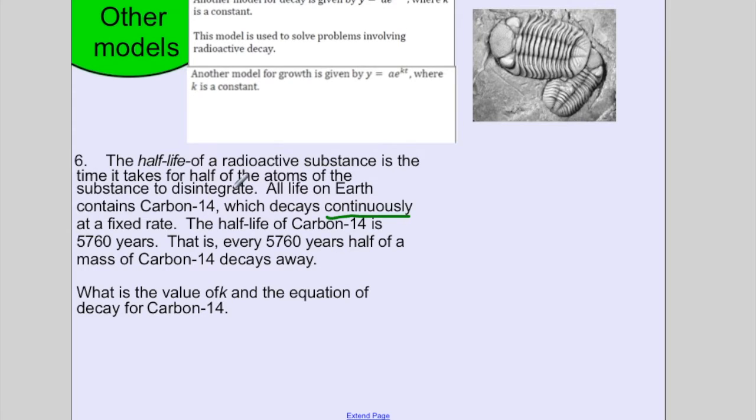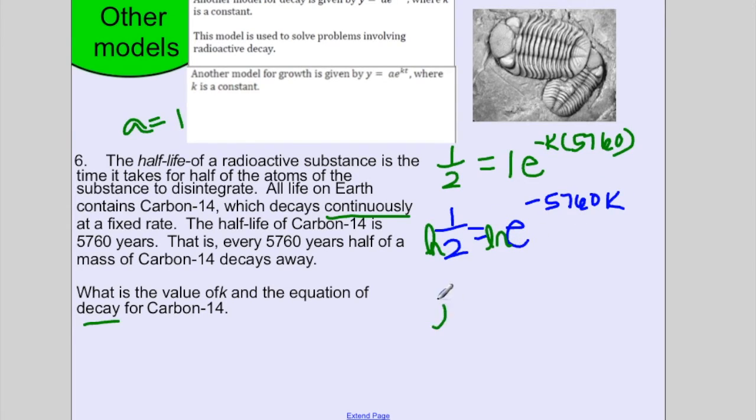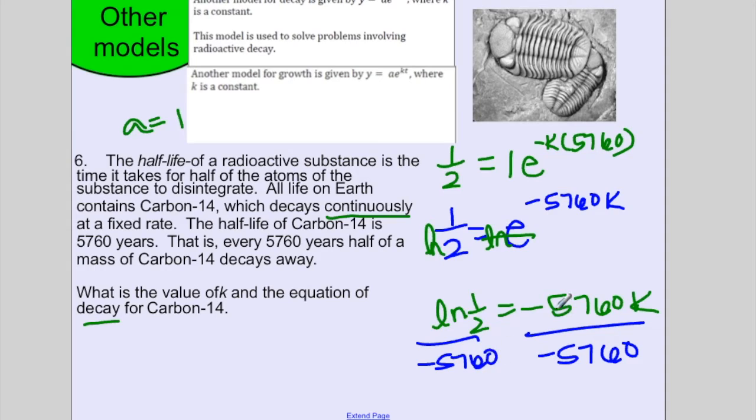So what we need to do is we need to figure out the half-life. They give us no information, but that's okay. Let's just say we start with our a is equal to 1. What is half of 1? Well, it's one half. So our start amount was 1, and we want to figure out, well, there's half of it left. And then, it's e to the, we don't know the rate, but I know it's decay. So I know it's a negative k times the time. How long does it take for half of it to be left? 5,760 years. Well, 1 times anything is just what I have. So e to the, I'm going to write this as negative 5,760k.